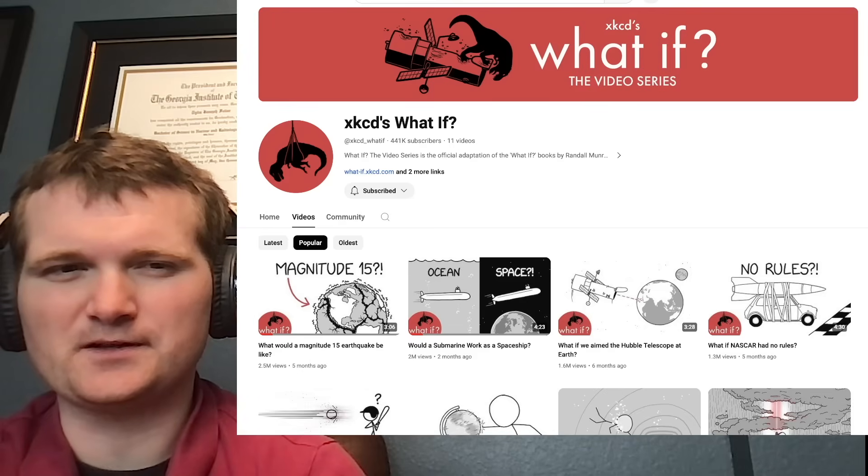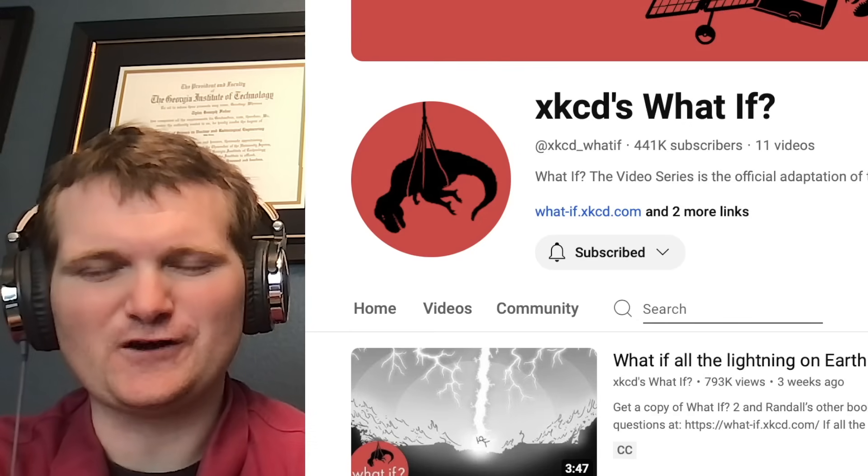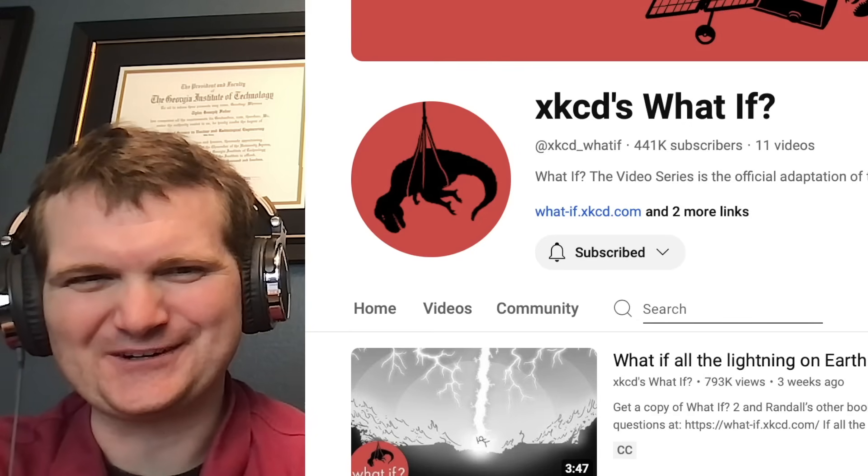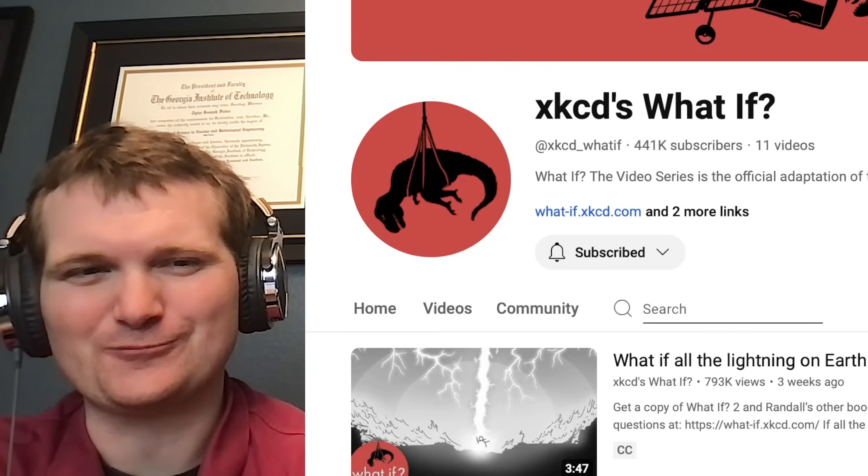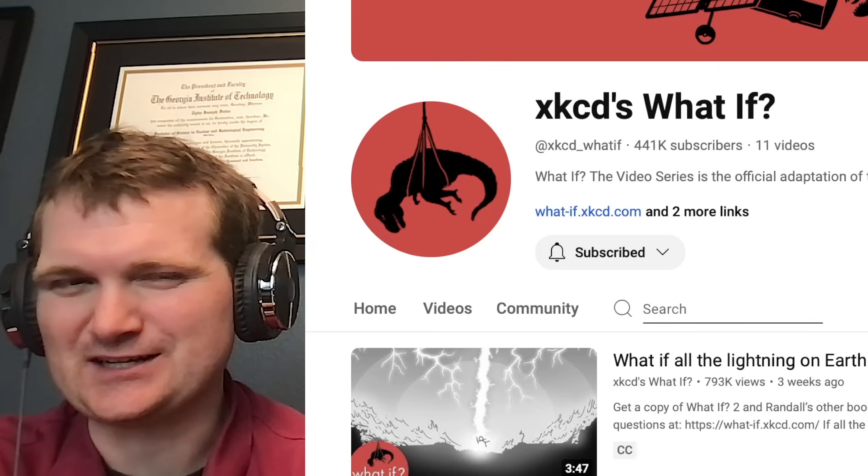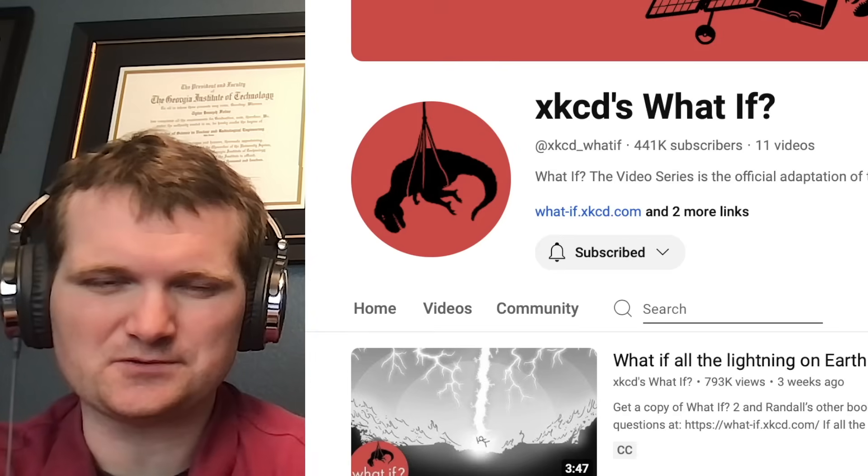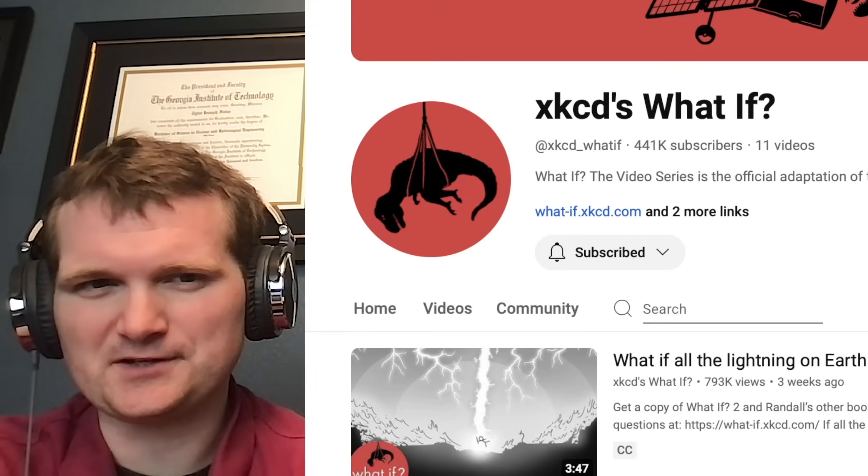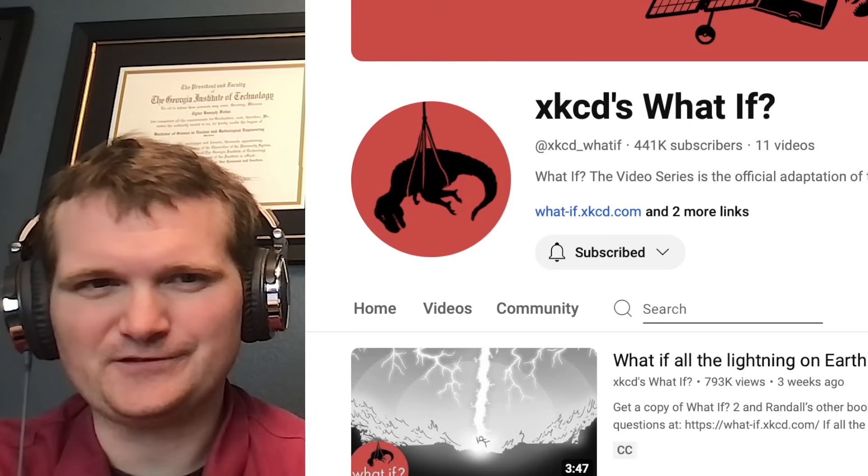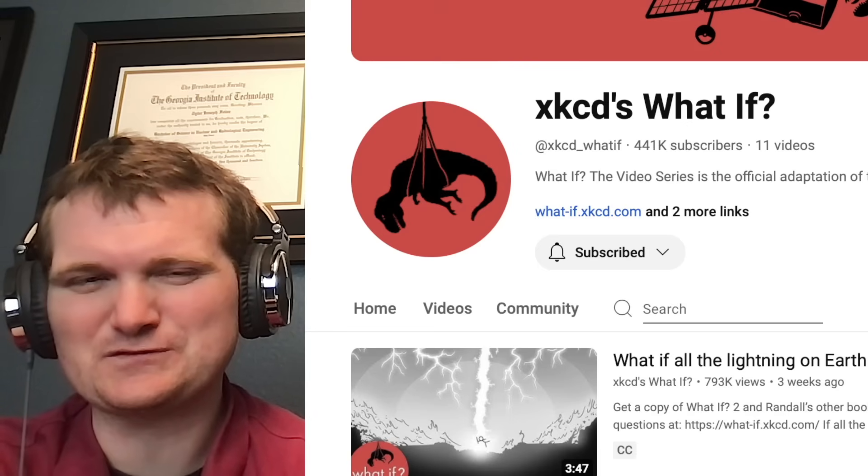Today we're looking at another heavily requested XKCD What If video. Specifically, what if all the lightning on Earth struck the same place at once? All the lightning. So like all the strikes over the course of a year? Well, a bolt of lightning is a billion joules, that's conservative. And a billion lightning strikes a year, if you convert that to megatons, that's gonna get you well over 200. And the most powerful nuclear weapon is 50, so we're talking quite a bit of energy.